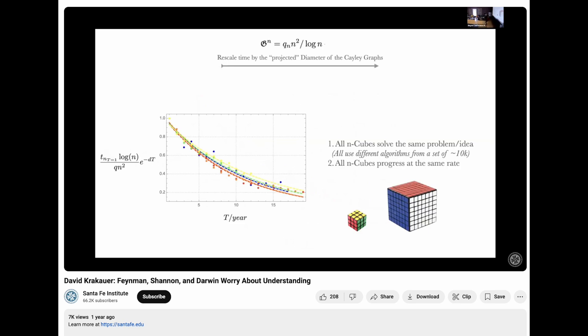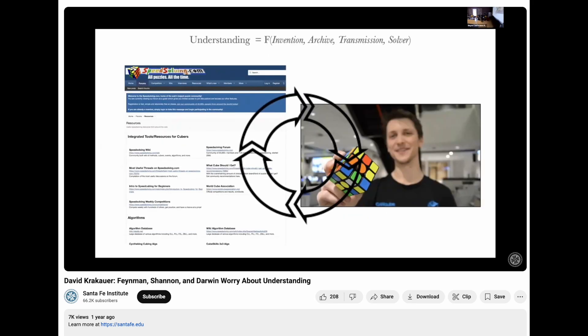All these cubes turn out to be the same. And they're all being solved at the same rate once you do the appropriate rescaling of your axis by the diameter of a very high-dimensional mathematical structure. It's a quite complicated form of understanding in culture.